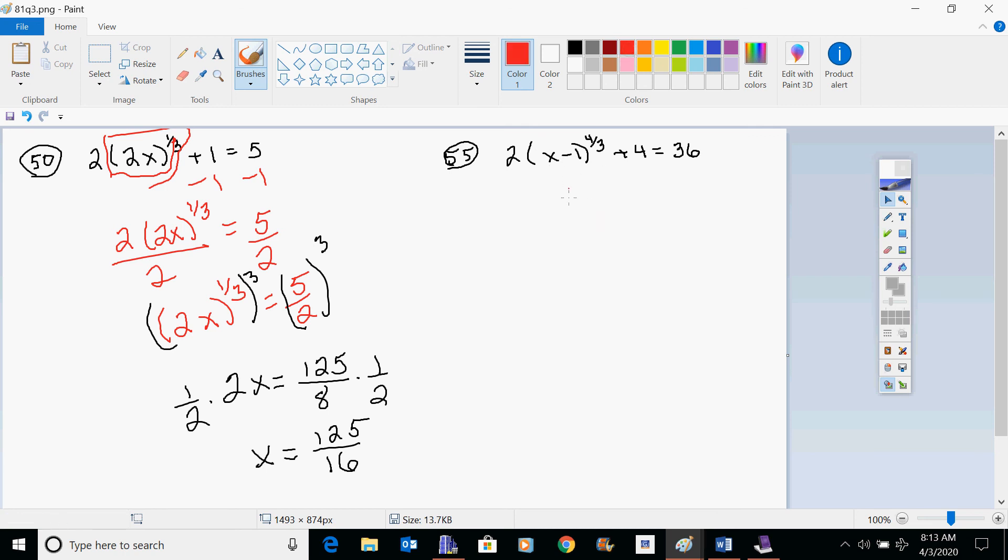Let's move on to this one. Once again, you have to isolate your variable or isolate the thing that holds your variable. So we're going to take away 4 from both sides and get 32. This one's going to come out much friendlier. And then you need to divide both sides by 2. x minus 1 to the 4 thirds power equals 16. We need to do power to a power, so you're going to choose the reciprocal, 3 fourths, 3 fourths.